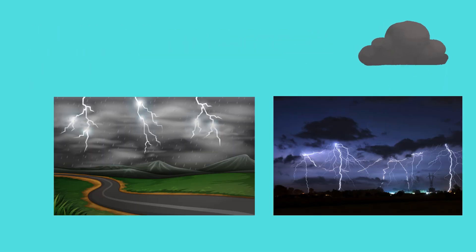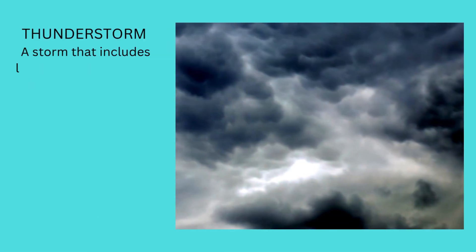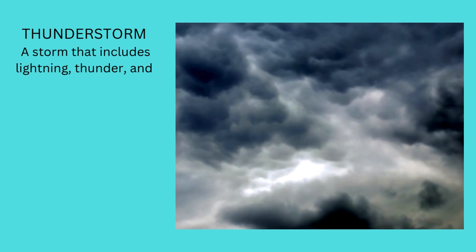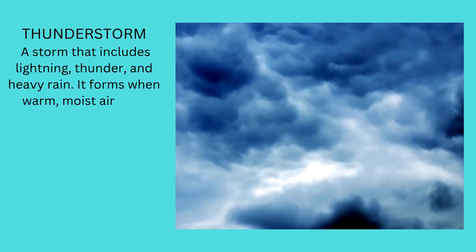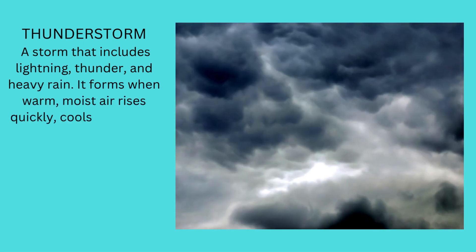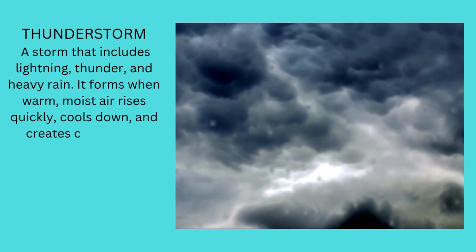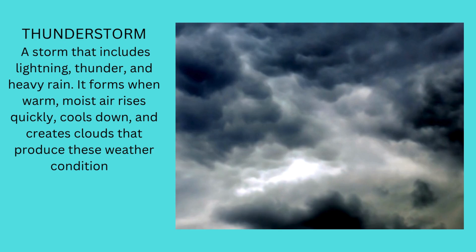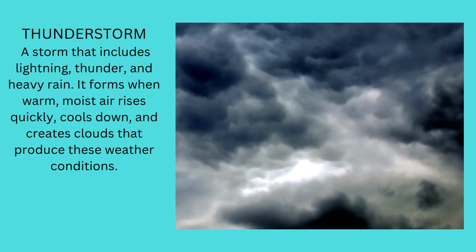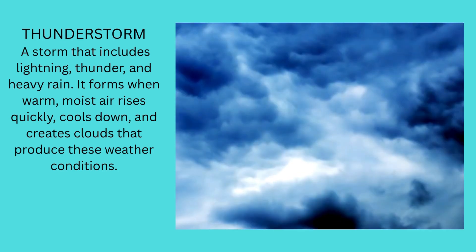Thunderstorm. A thunderstorm is a storm that includes lightning, thunder, and heavy rain. It forms when warm, moist air rises quickly, cools down, and creates clouds that produce these weather conditions.